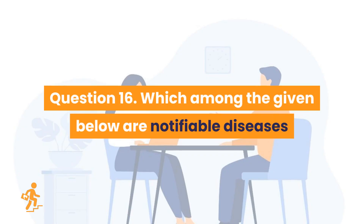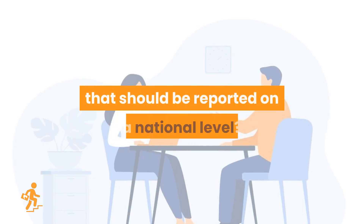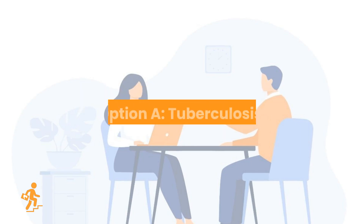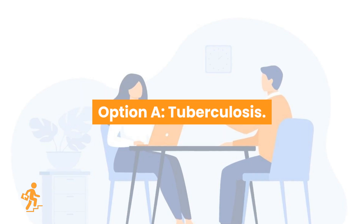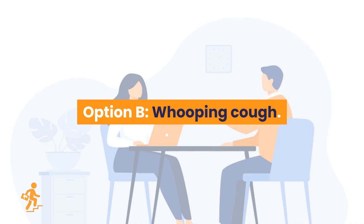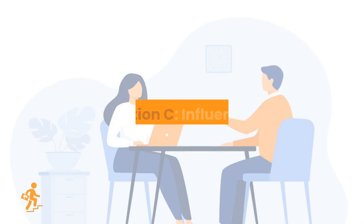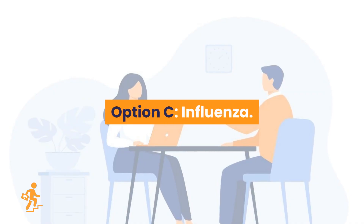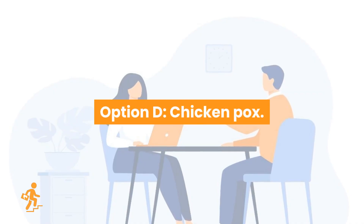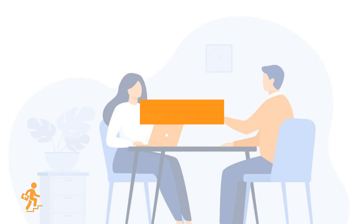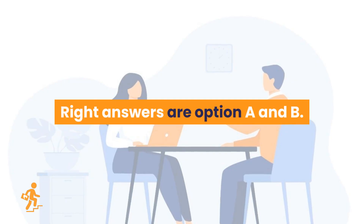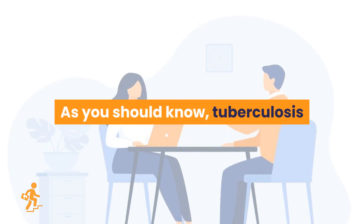Question 16. Which among the given below are notifiable diseases that should be reported on a national level? Option A: Tuberculosis. Option B: Whooping cough. Option C: Influenza. Option D: Chicken pox. Right answers are Option A and B. Tuberculosis and whooping cough are the notifiable diseases.